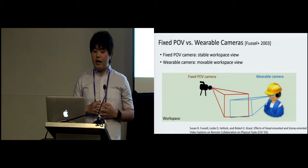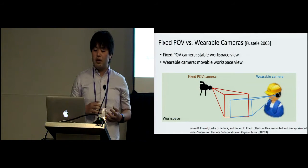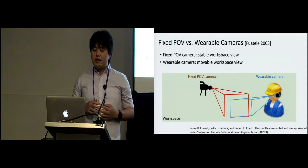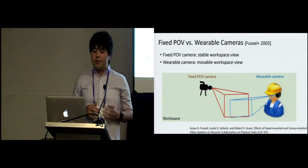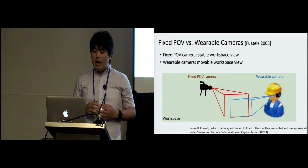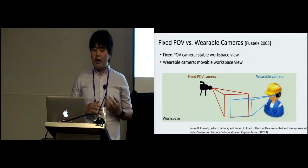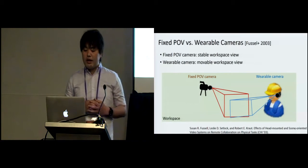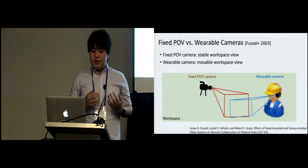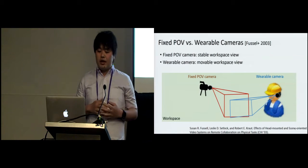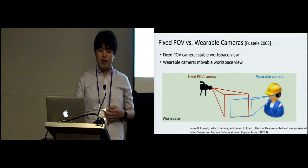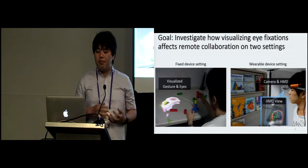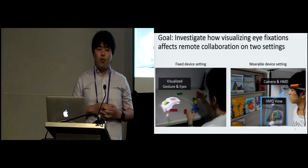Generally, there are two main camera positions in the remote collaboration framework. The first setting is a fixed point of view camera that provides a stable view to the collaborator. The other is using a wearable camera that can move the camera position by worker's movement. We introduce two types of scenarios of remote collaboration by using fixed device and wearable device settings.